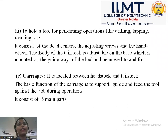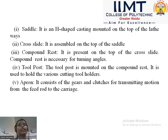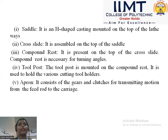The carriage is located between the headstock and tailstock. Its basic function is to support, guide, and feed the tool against the job during operation. It consists of five parts: the saddle, which is an H-shaped casting mounted on top of the lathe rails; the cross slide, assembled on top of the saddle; and the compound rest, which is present on top of the cross slide. The compound rest is necessary for taper turning — it is used when we need to set a desired angle or perform taper turning operation.